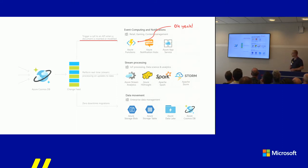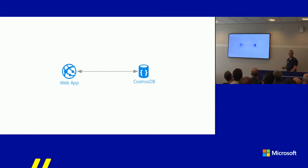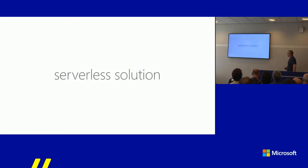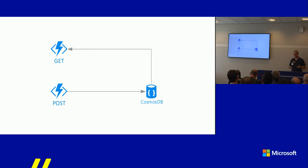So how would the solution look in the traditional non-serverless world? Fairly straightforward — you'd have a web app exposing two endpoints: one for retrieving the minified URL and one for creating it, with a two-way binding to Cosmos DB. The serverless solution looks fairly similar: you have two Azure Functions, one for retrieving and one for posting a new minified URL, and storing it inside Cosmos DB.